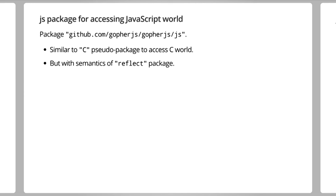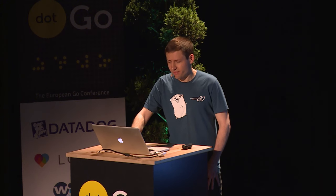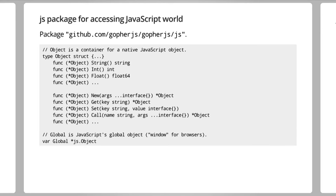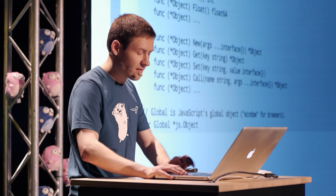A little basics of what it's like to use GopherJS in the frontend. There is a JS package for accessing the JavaScript world. It is very similar to the C pseudo-package, but it has the semantics of the reflect package. This is roughly what its API is like. You have your object, which is a container for the native JavaScript object. You can convert it to a bunch of types, get a key, set a key, call a method, and so on. The package-level global is JavaScript's global object — that's window in browsers — and it lets you access all of the other things inside the browser.